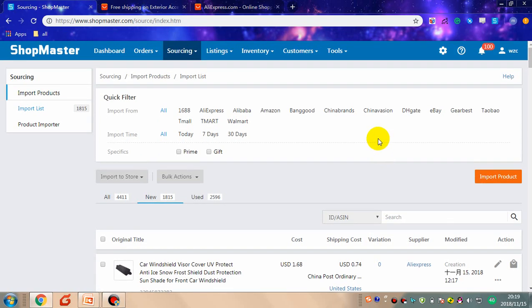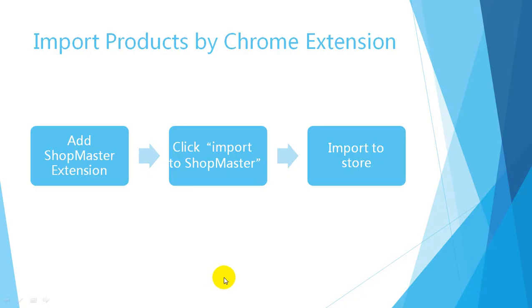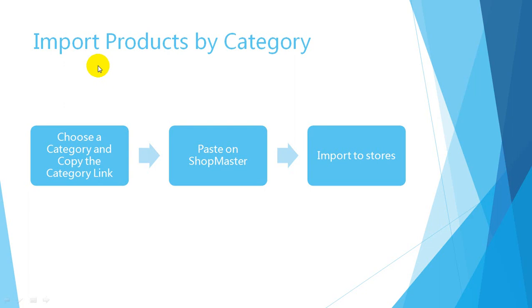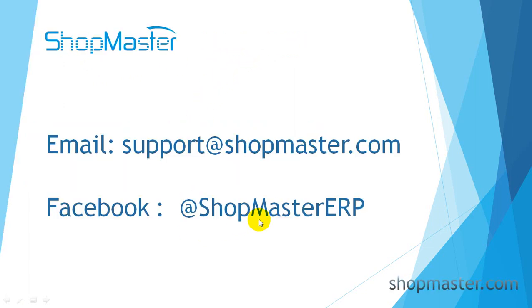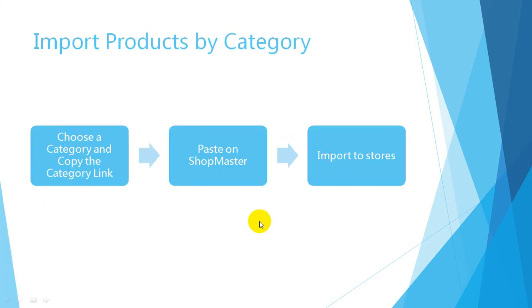You can then click 'import current page' to import them all to Shopmaster with one click. Now let's move on to the last method: import product by category. Let's go back to Shopmaster.